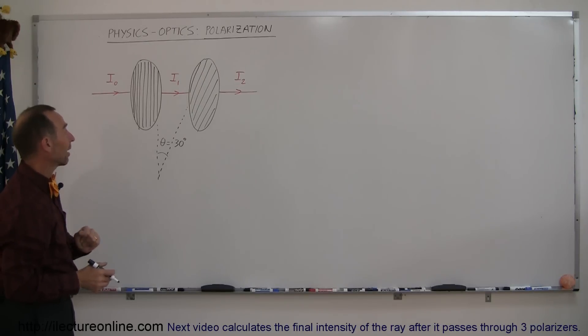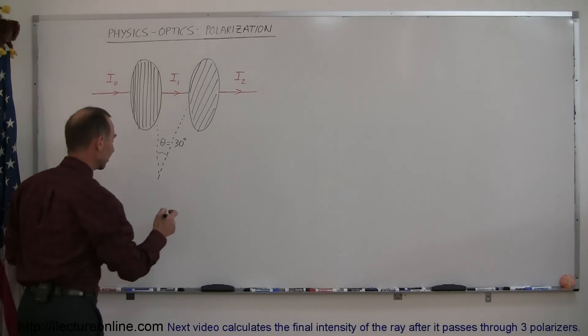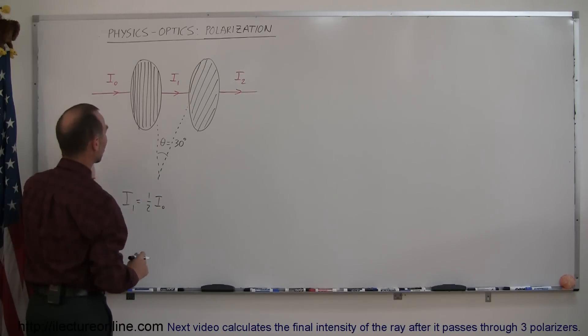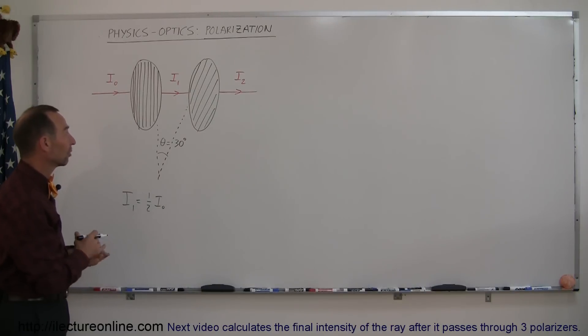We can do that one step at a time. First of all, intensity 1 relative to intensity 0 can be easily found by saying intensity 1 is equal to half of the original intensity because when light passes through the first polarizer, it loses half of its original intensity.